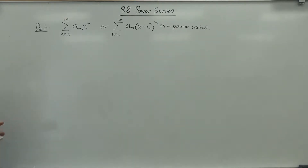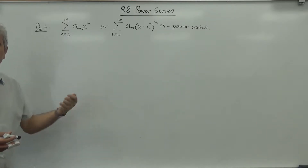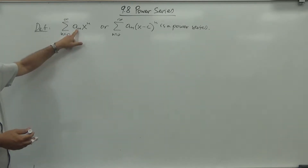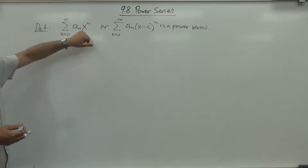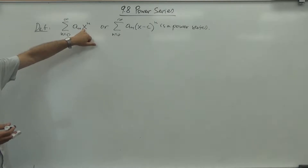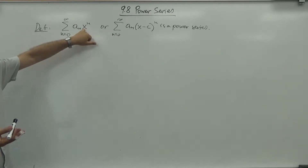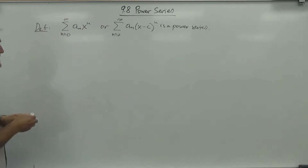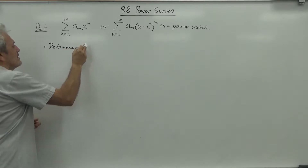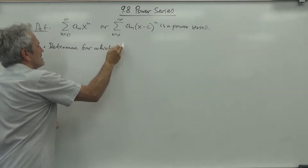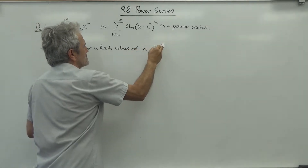Generally, x is an undisclosed number. Since a_n is just a sequence and n is a natural number, when we plug in specific values of x we get a numerical series. For some values of x it will converge, and for some it will diverge. Our main goal today is to determine for which values of x does it converge.